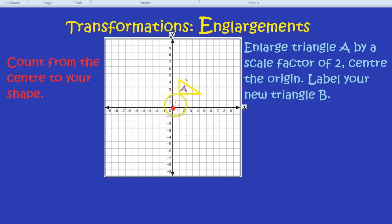How about the bottom right hand corner here? Let's count from the centre to our shape. That's 4 right and 2 up. What's it going to be now then? Instead of 4 right, it's now going to be 8 right. Instead of 2 up, it's now going to be 4 up, which is here. 8 right from the centre and 4 up.